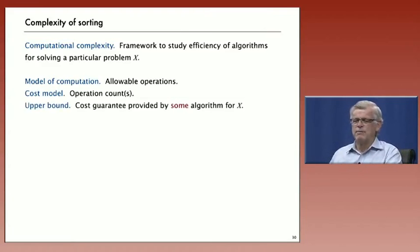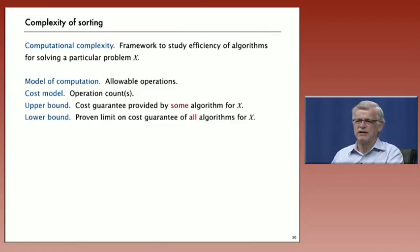Now, in framing the difficulty of problems, we'll need two things. One is what's called an upper bound, which is a cost guarantee that's provided by some algorithm for solving the problem. That's an upper bound on how difficult it is to solve the problem. We have an algorithm that can solve it, it's at least that easy.